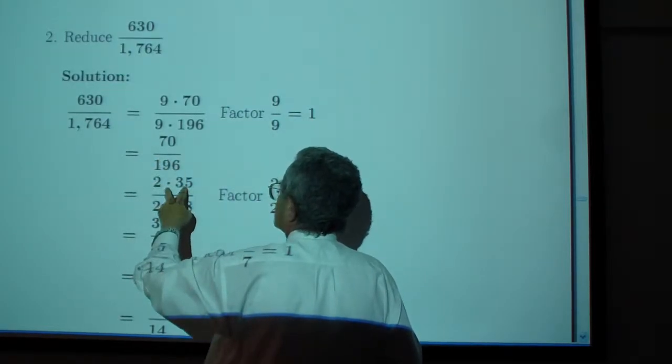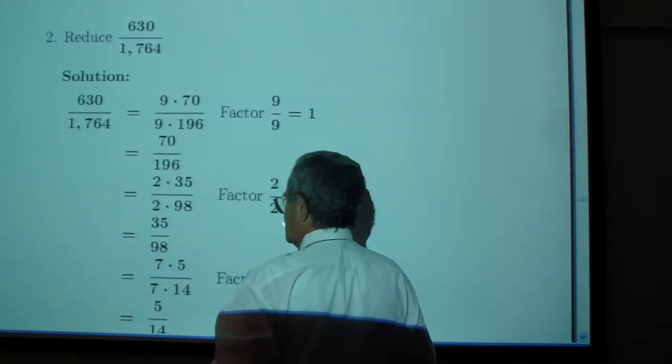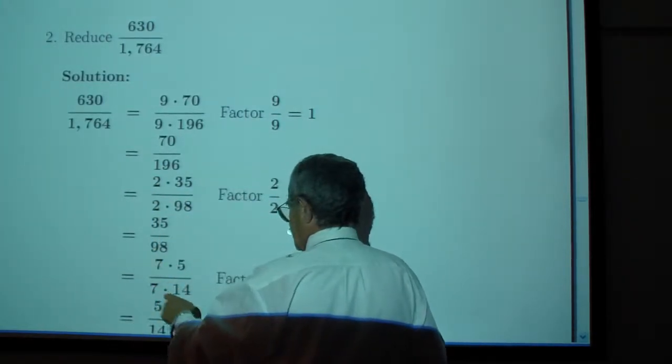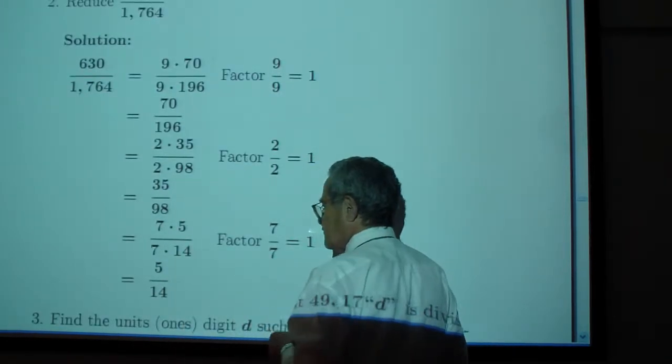Write 70 as 2 times 35. 196 has 2 over 98. Factor 2 over 2. 7 times 5 over 7 times 14. Factor 7 over 7 which is 1, and we're left with 5 over 14.